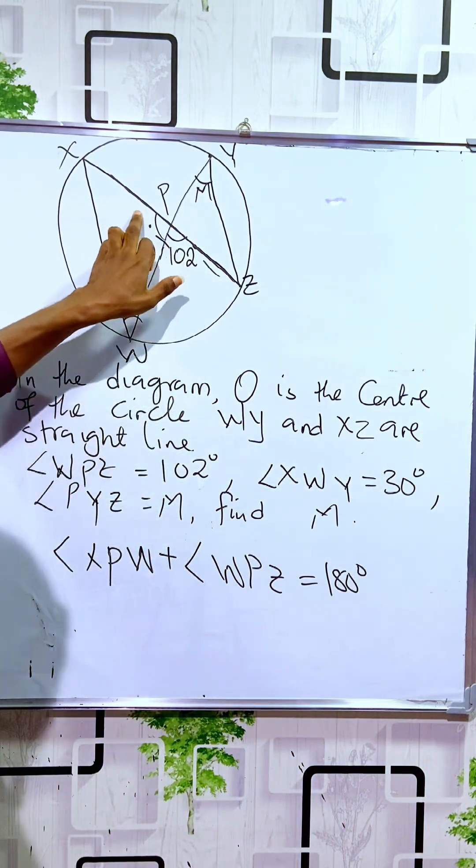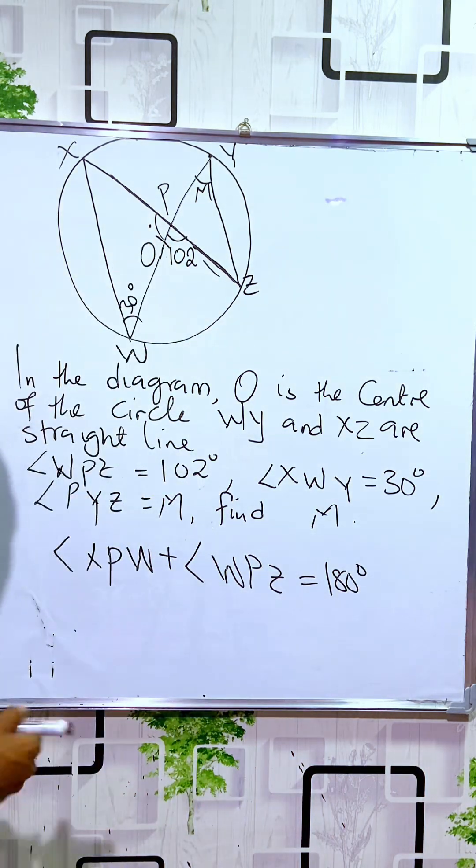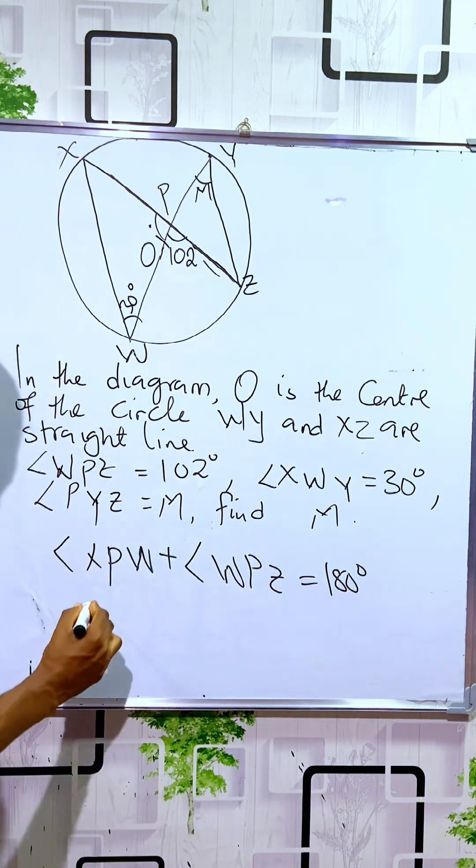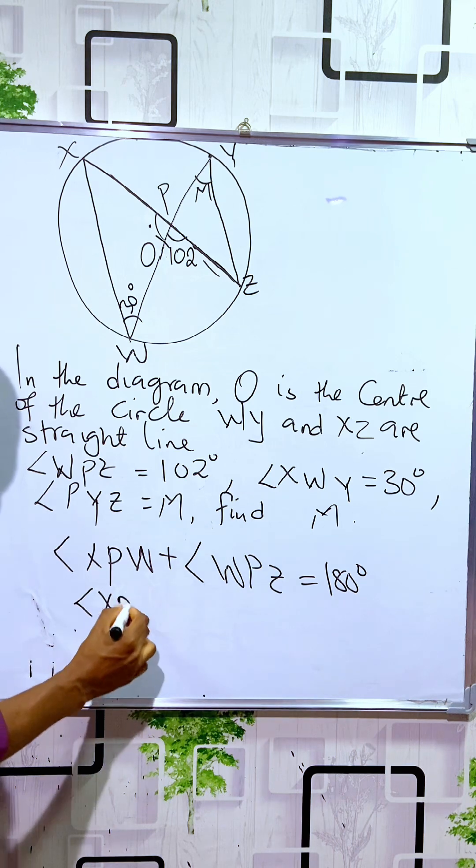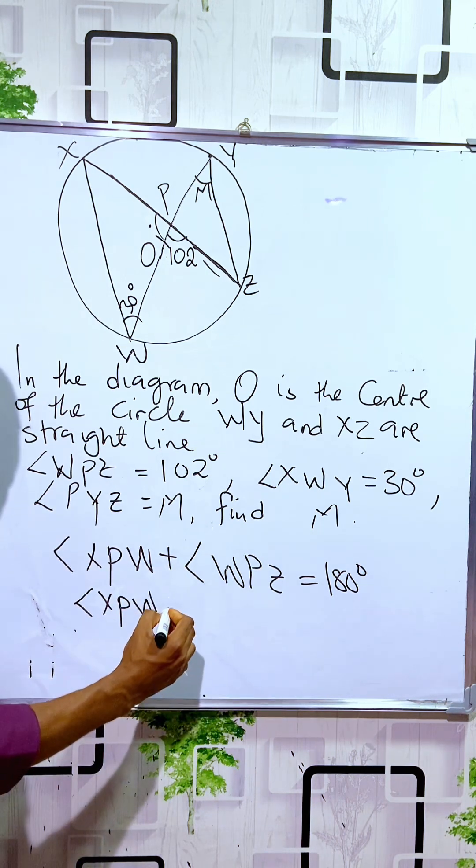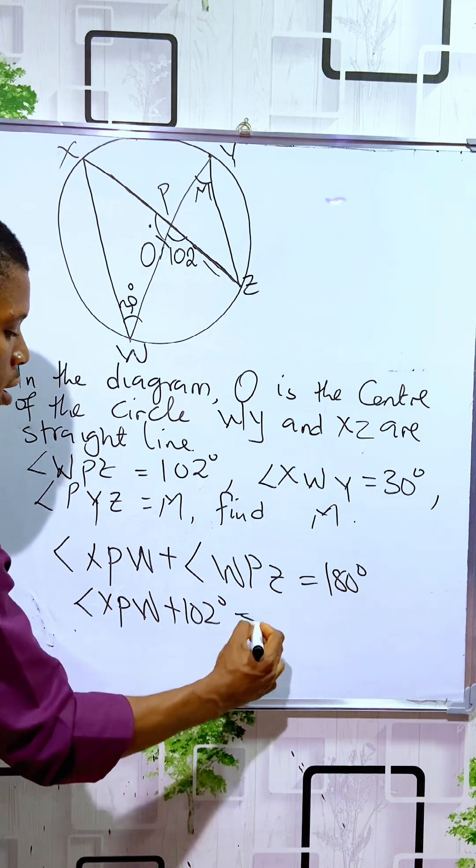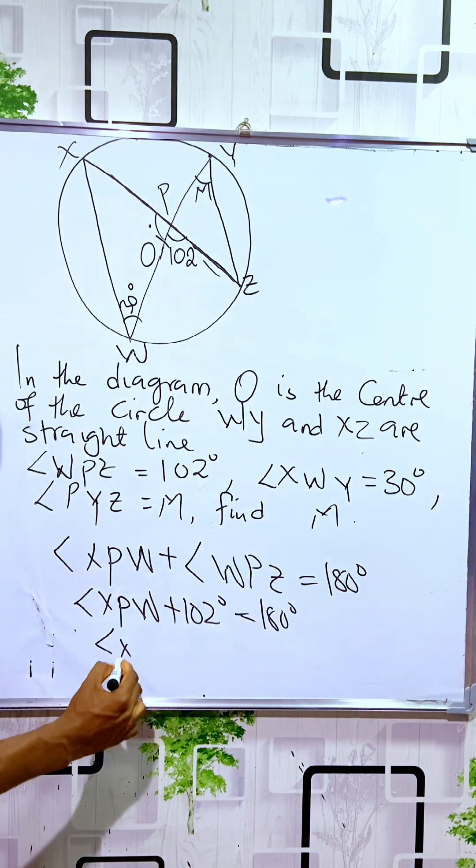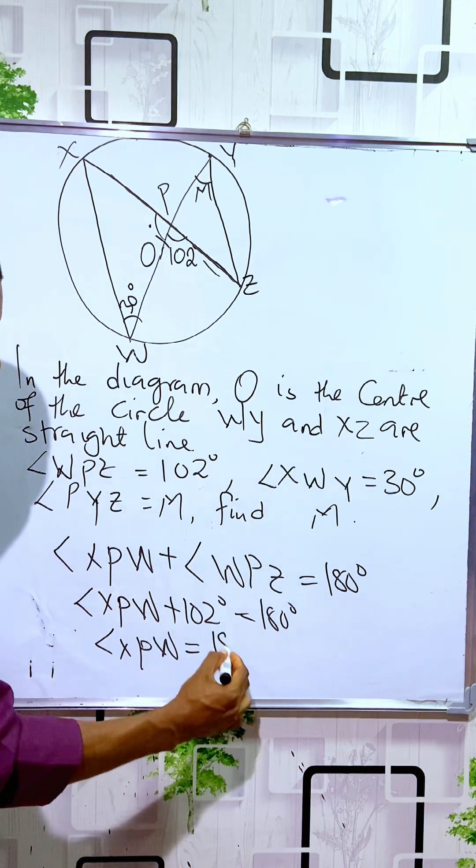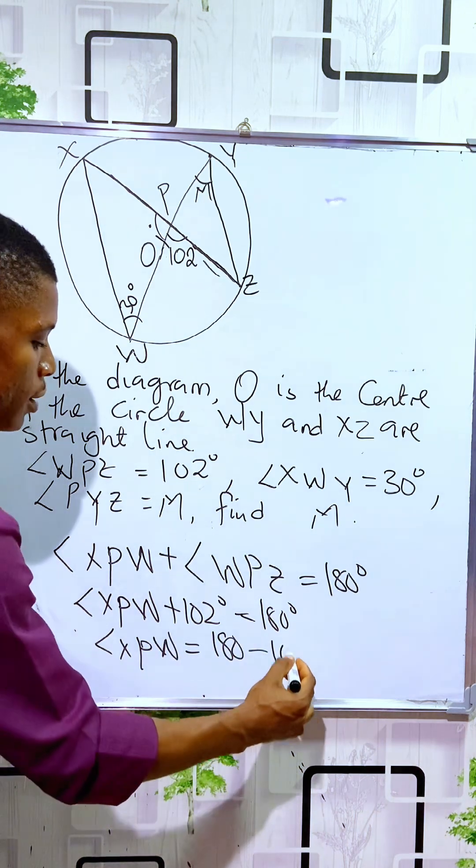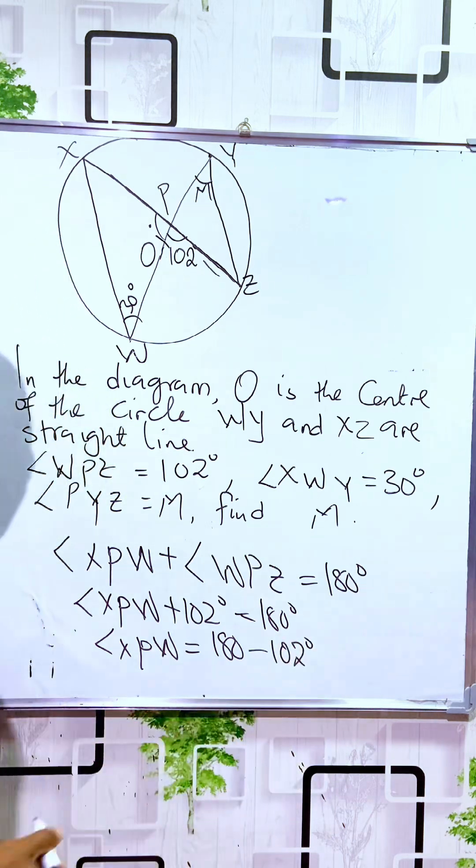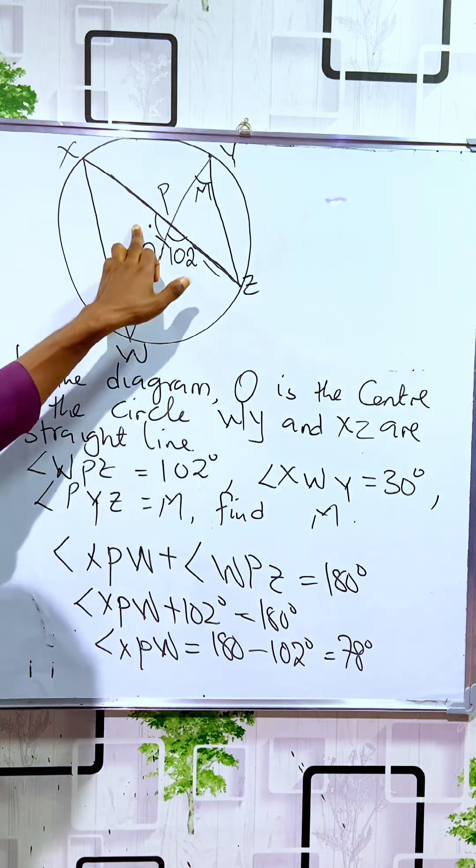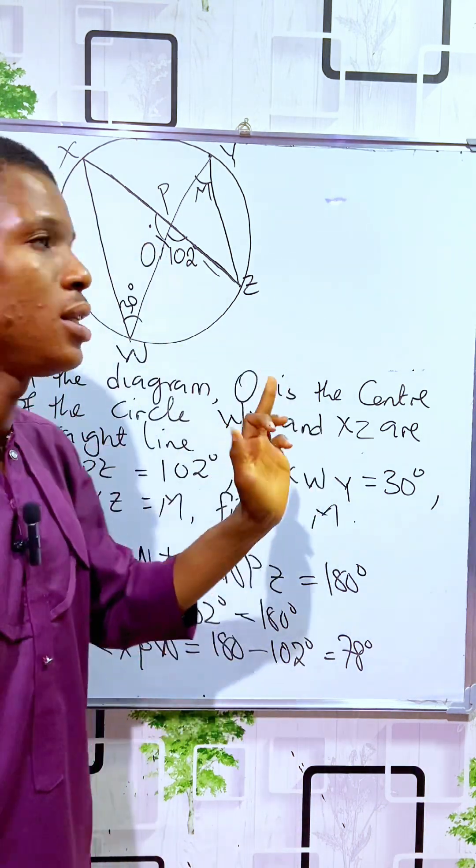Therefore, angle XPW equals 180 minus 102 degrees, which is 78 degrees. So the angle here is 78 degrees.